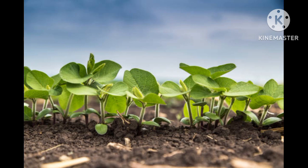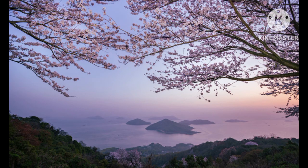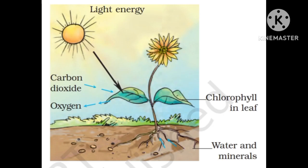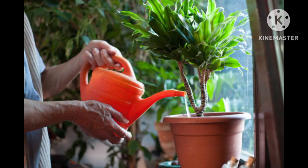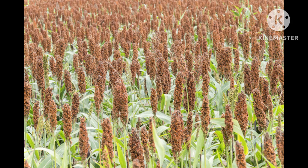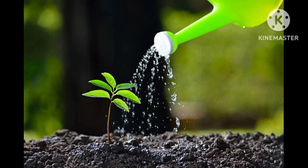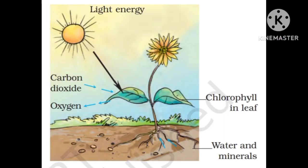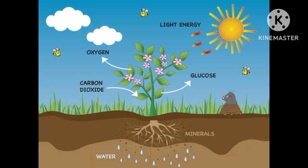Plants are the only organisms that prepare food for themselves using water, carbon dioxide, sunlight and minerals. The mode of nutrition in which organisms make food for themselves from simple substances is called autotrophic — meaning self-nourishment. Plants are called autotrophic, or self-nourishment, organisms.